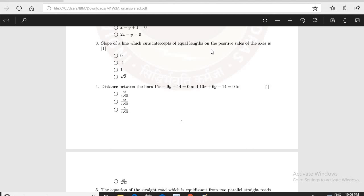Hi everyone, my name is Varti Chaudhary and we are going to discuss the week 3 graded assignment of data sense. Now question number 3 states that slope of a line which cuts intercepts of equal lengths on positive sides of the axis is what?